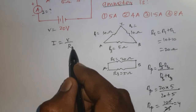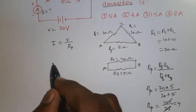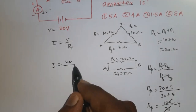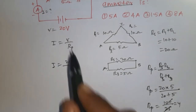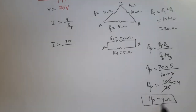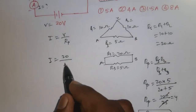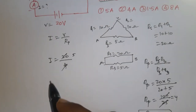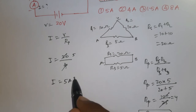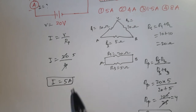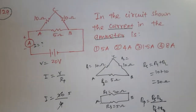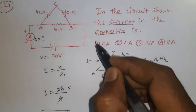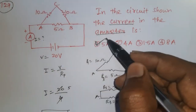Now substituting in I = V/RP: I = 20/4 = 5 ampere. This is the ammeter reading. The correct option is the first one: 5 ampere.